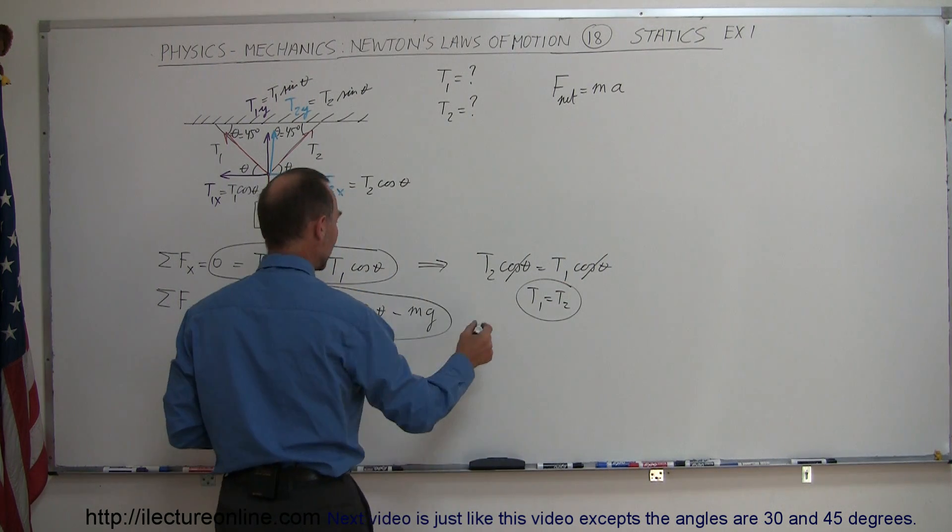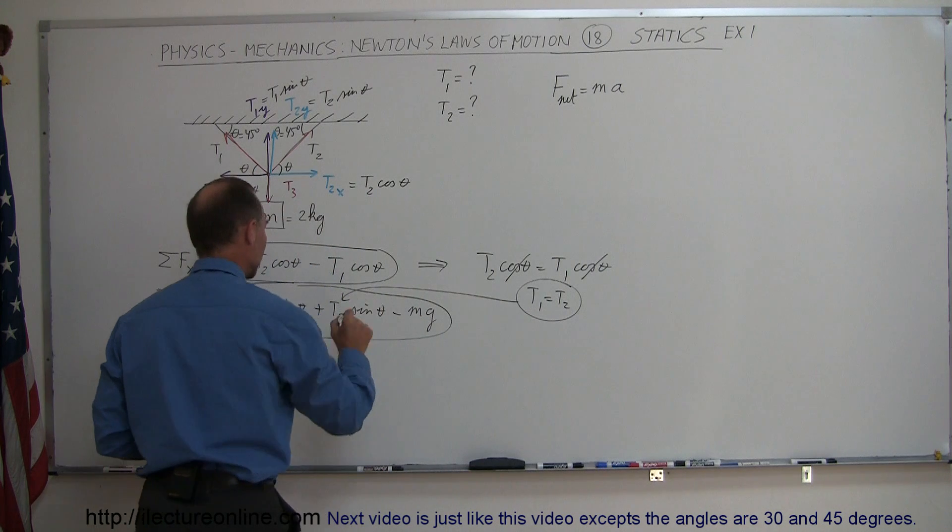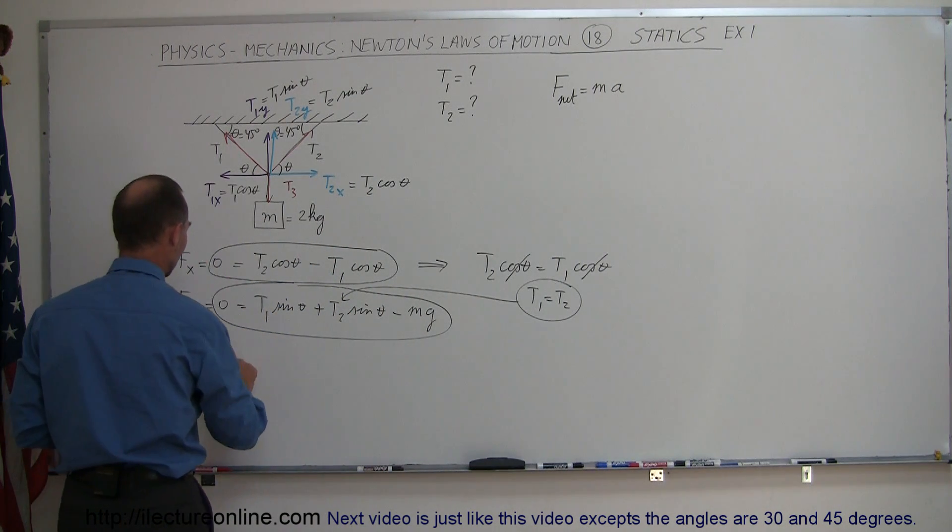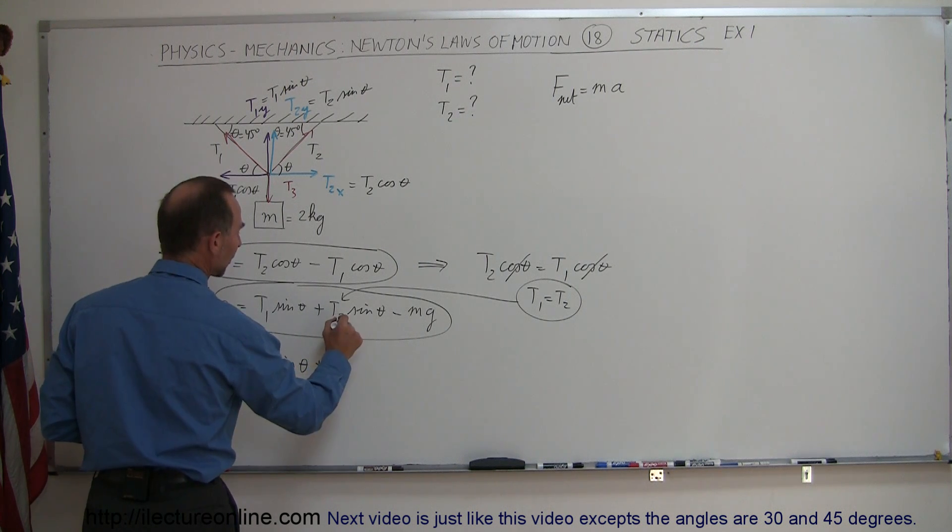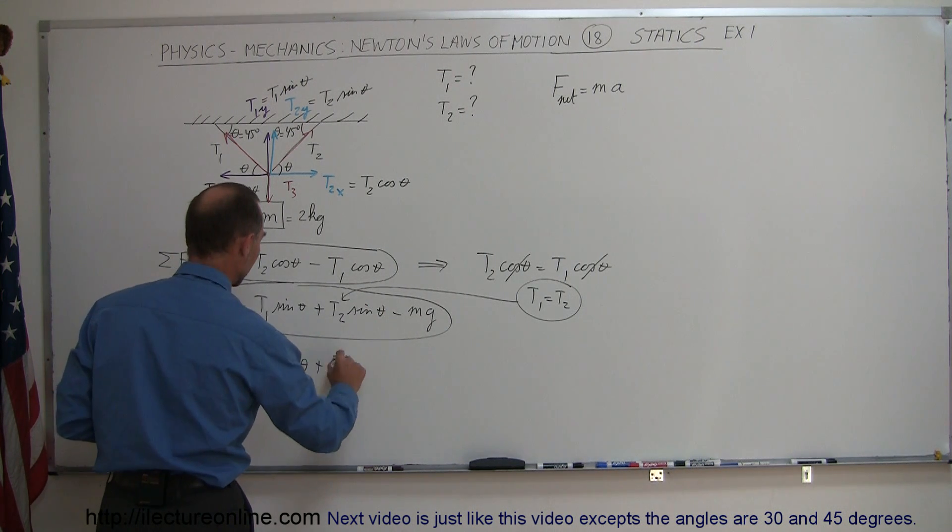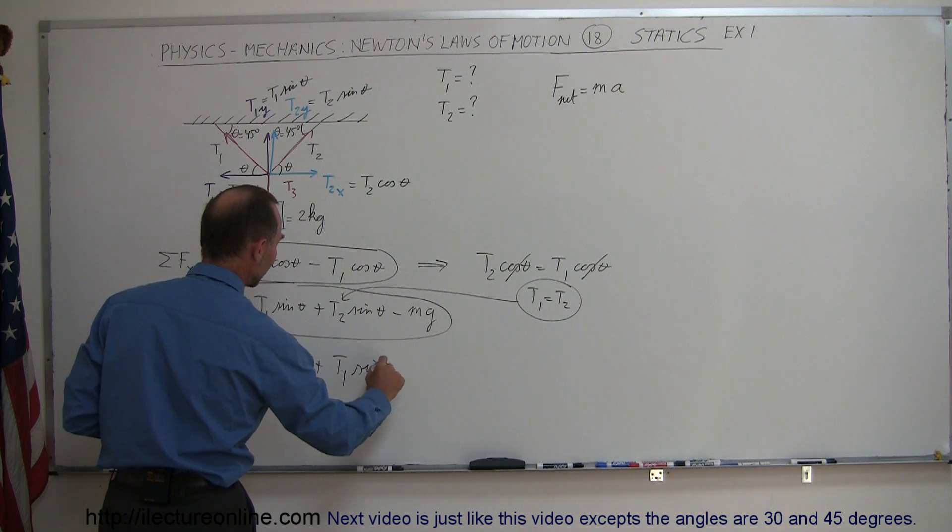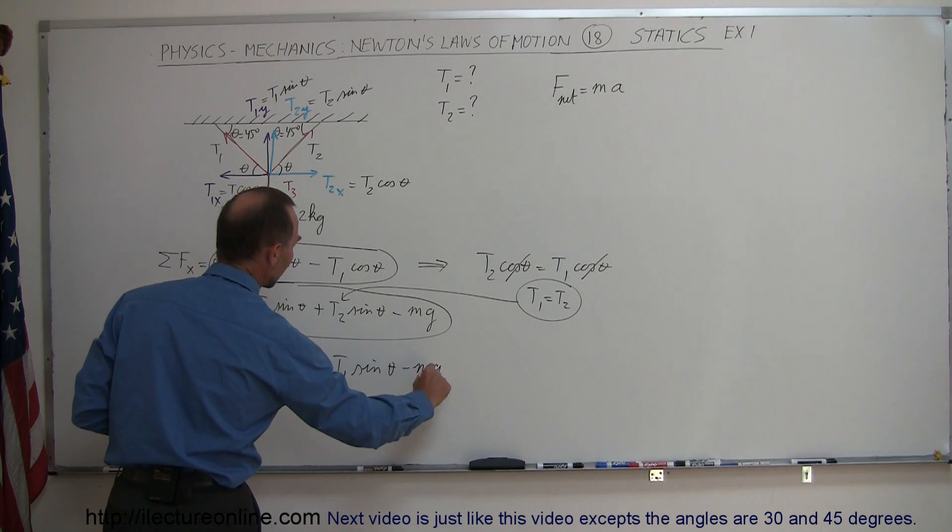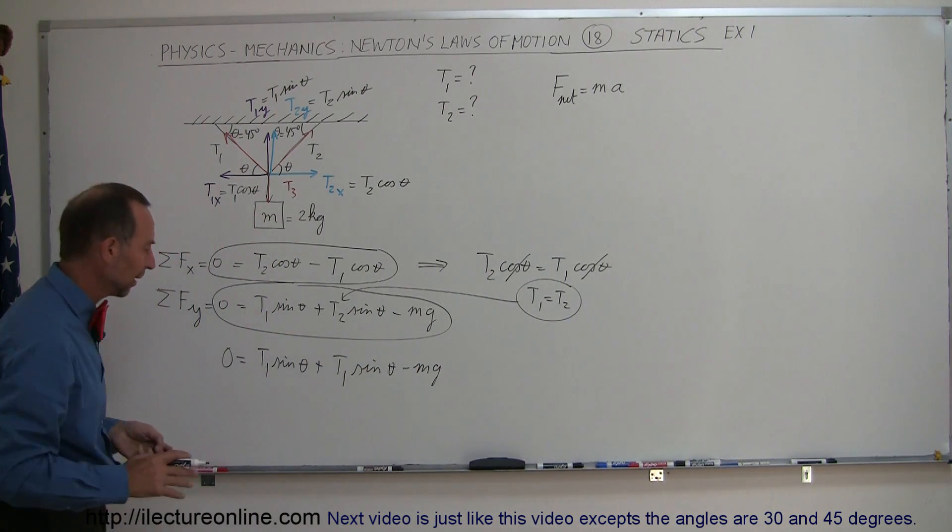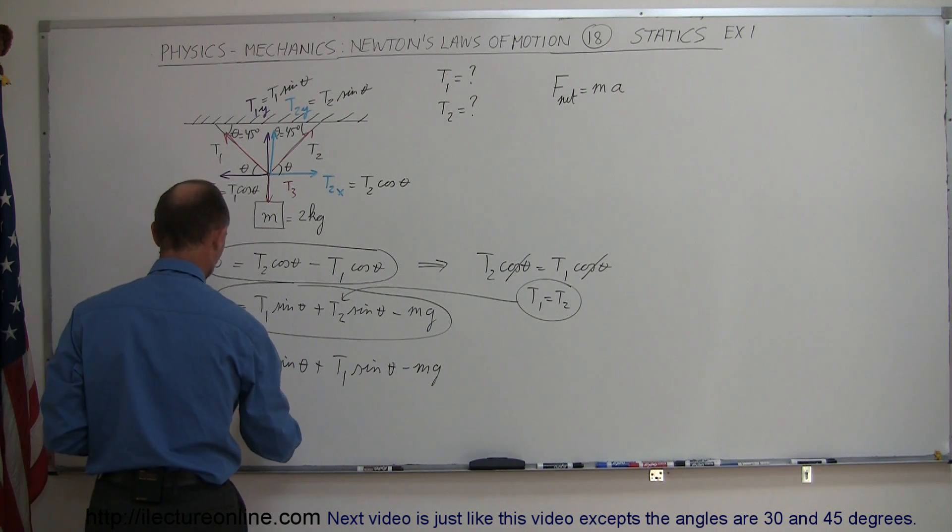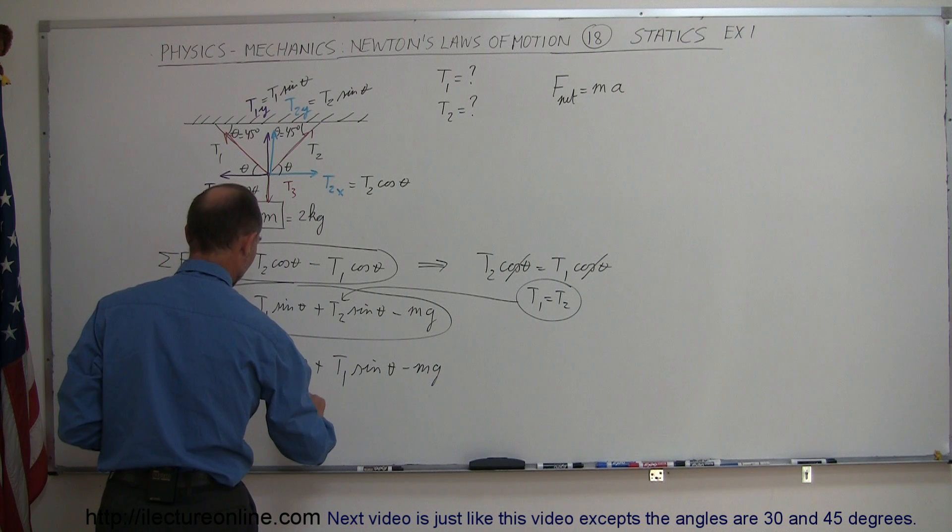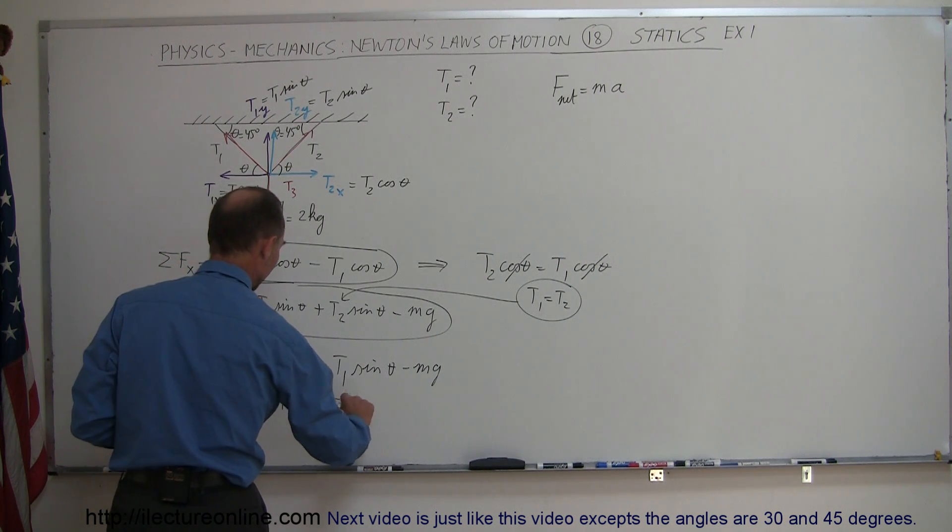So now we can go ahead and plug that into one of our equations here. Now we can say that zero equals T1 times the sine of theta, plus instead of T2, I'm going to write T1, because they're equal, T1 times the sine of theta, minus mg, and that adds up to zero. And now I can solve that equation for T1. I can combine these two, so zero equals 2 T1 sine of theta minus mg.